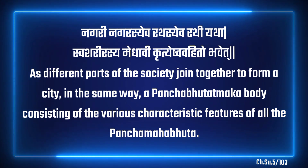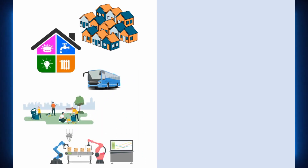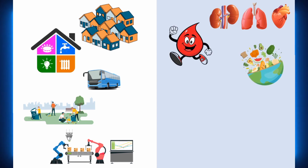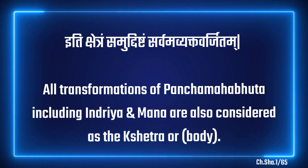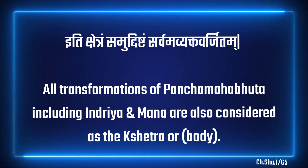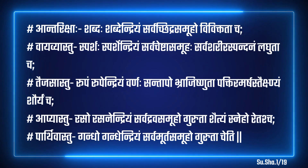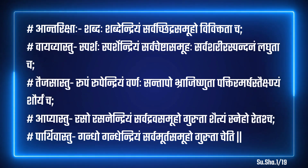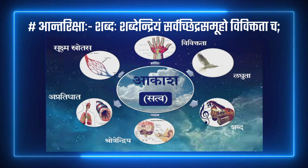The body has been given the analogy of a whole city in Ayurveda Shastra. As different parts of society join together and form a city, in the same way the Panch Bhutatmak body consists of various characteristic features of all the Panch Mahabhut. Maharshi Charak explains Sharir or Kshetra by saying Iti Kshetram Samudhishtam Sarvam Avyaktavarjitam — all the transformations of Panch Mahabhut including Indriya and Man are also considered as the Kshetra. Sound, the organ of sound, all vacant places and actions separating things belong to Akash Mahabhut.